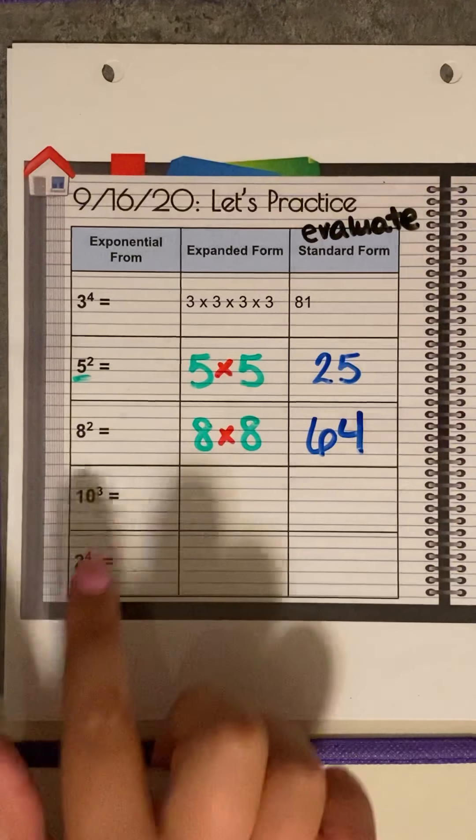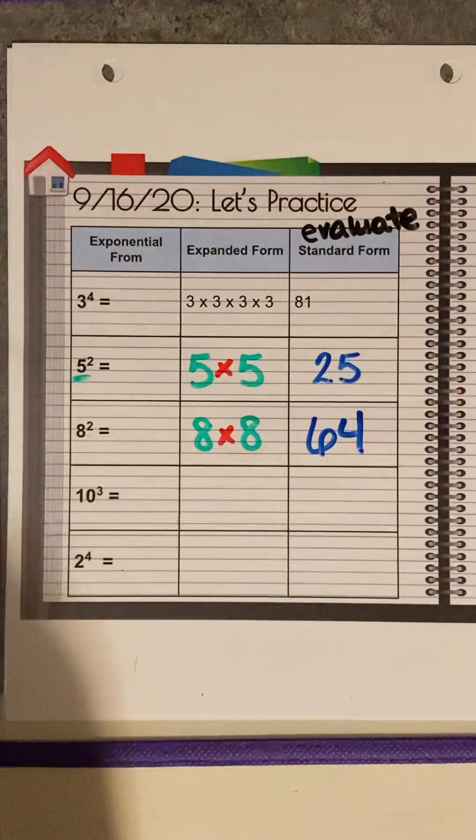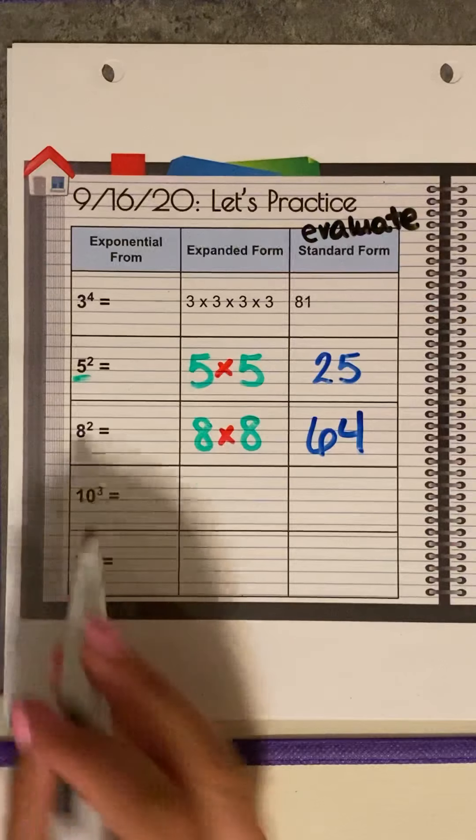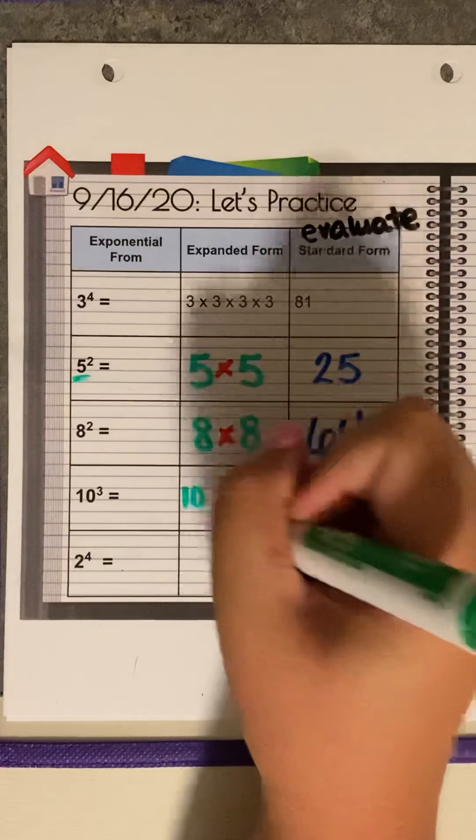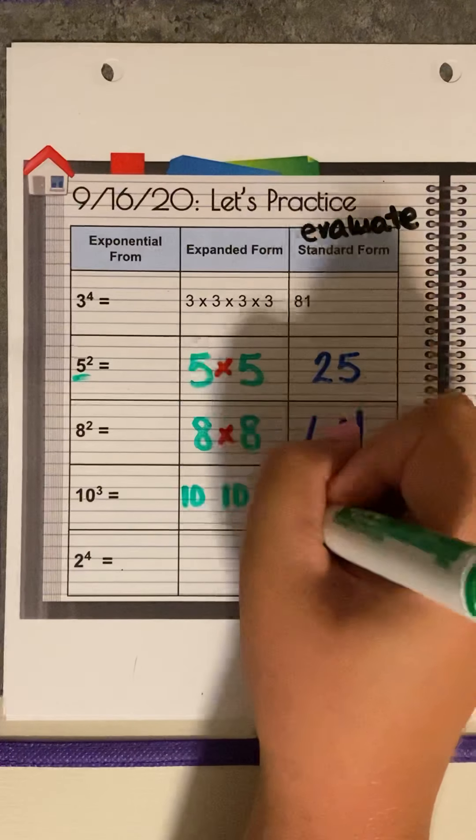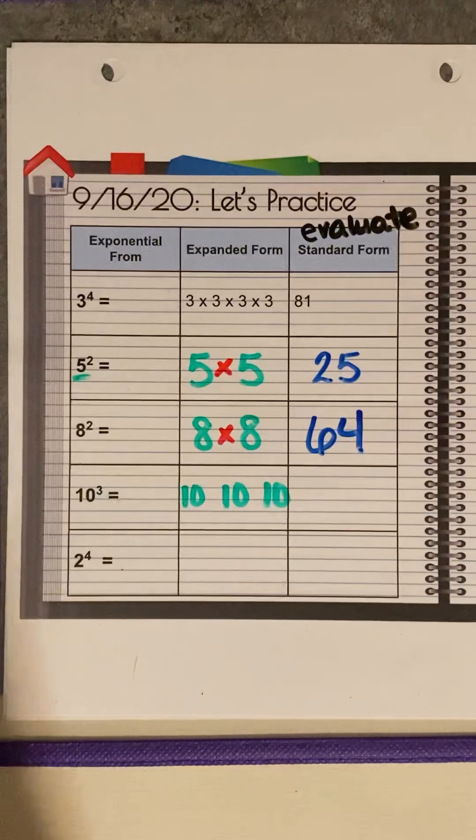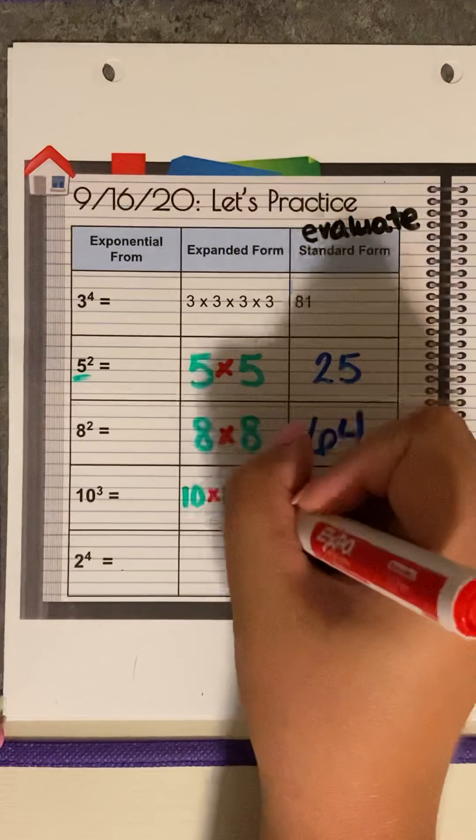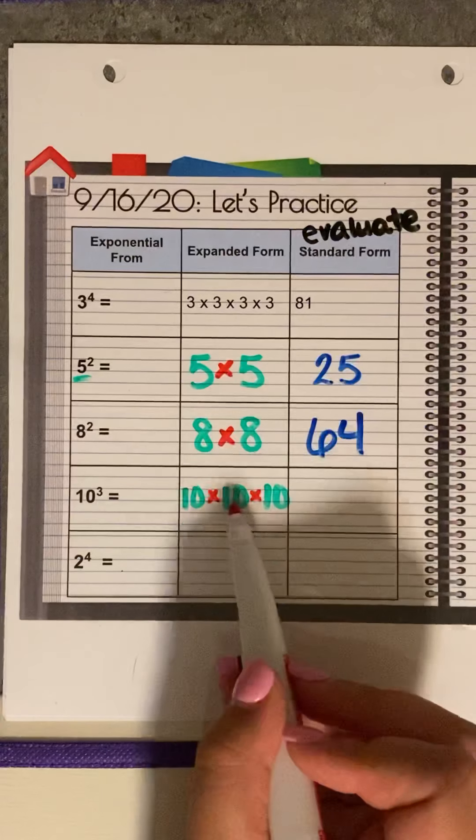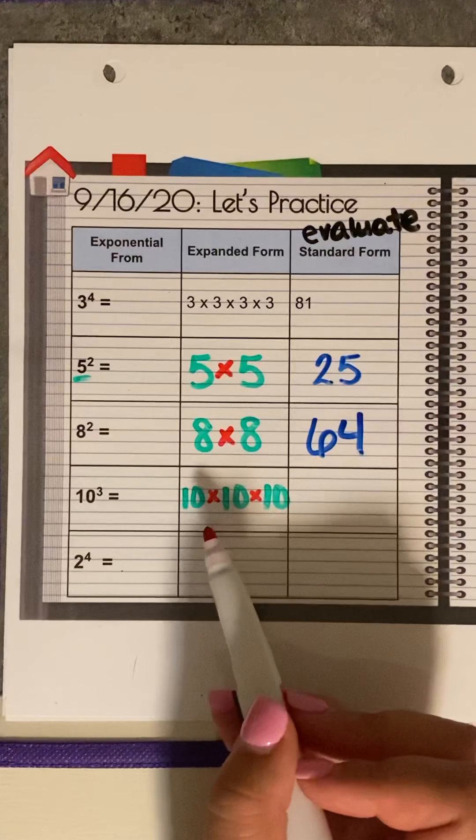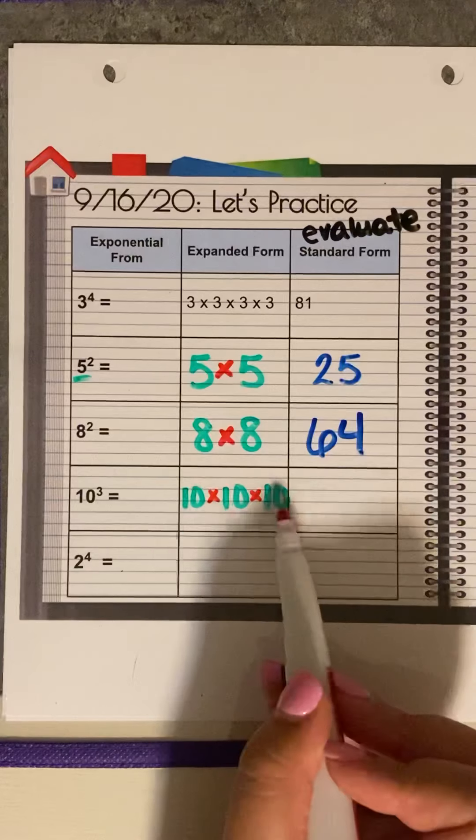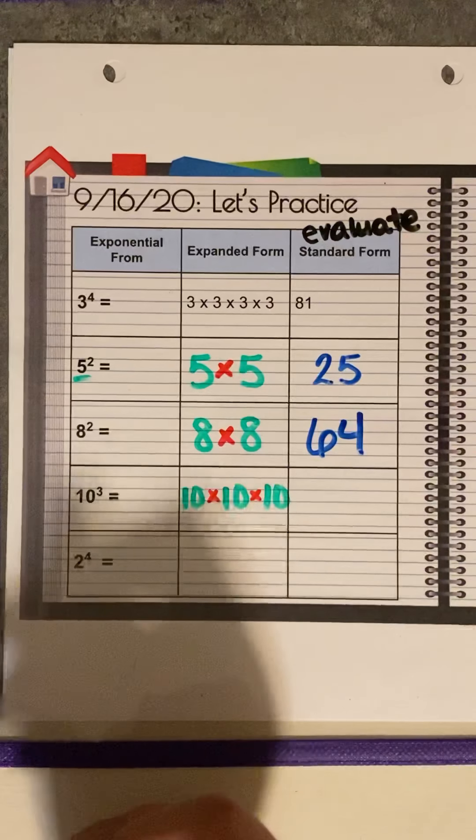All right. Ten to the third power. Ten is going to be our base. How many times are we going to see that ten? Three times. Ten times ten times ten. Remember, we're multiplying them. So multiply. Now, what's ten times ten? That's a hundred. And then a hundred times ten, that's a thousand, you guys.